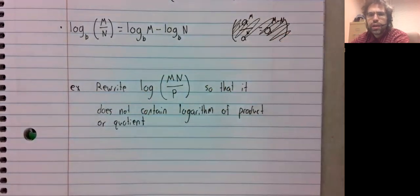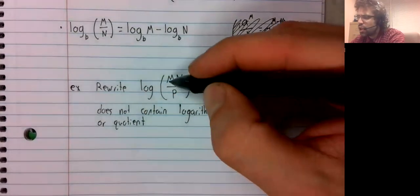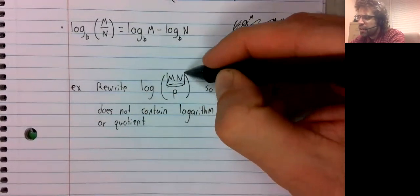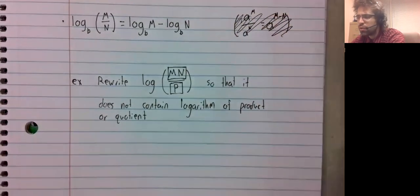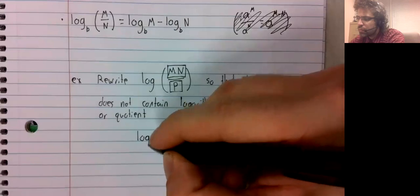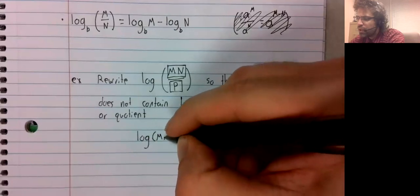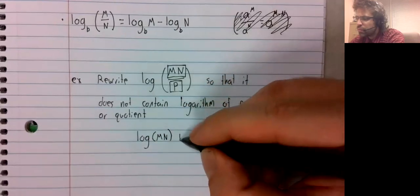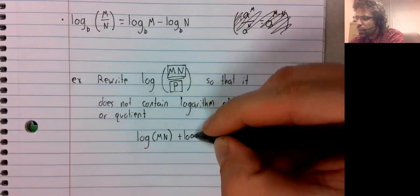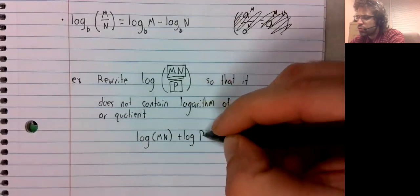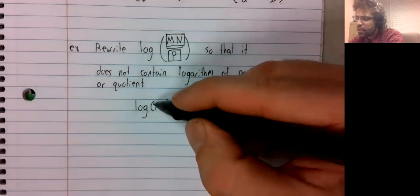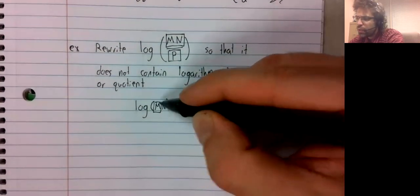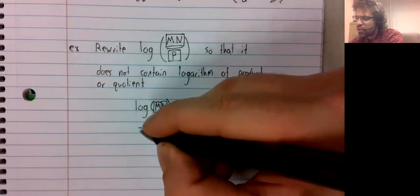And it's pretty plug and play. We've got a quotient here, so we use the quotient rule. And now we have a product here.